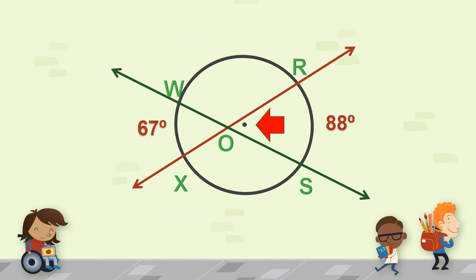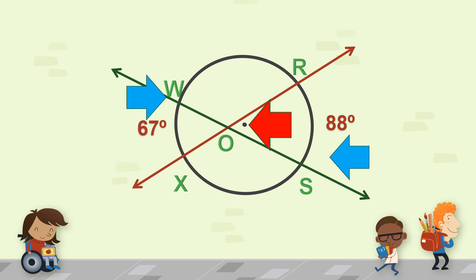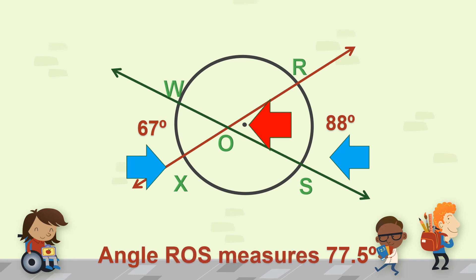Another example. We are looking for the measure of angle ROS. The arc behind it — arc RS — is 88 degrees, and the arc in front — arc WX — is 67 degrees. Add and then divide by 2: 88 degrees plus 67 degrees, then divide by 2 — the measure of angle ROS is 77.5 degrees. And since WOX is the opposite angle of ROS, it is also 77.5 degrees, because opposite angles are congruent.